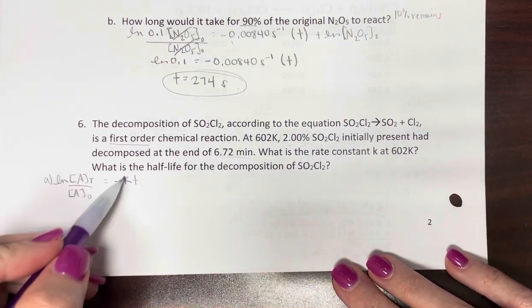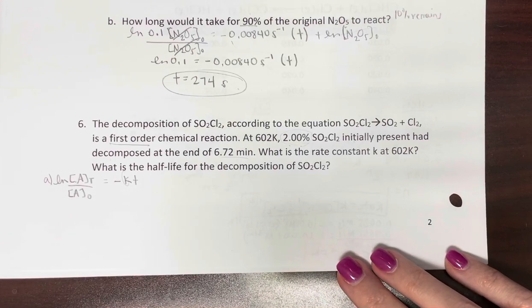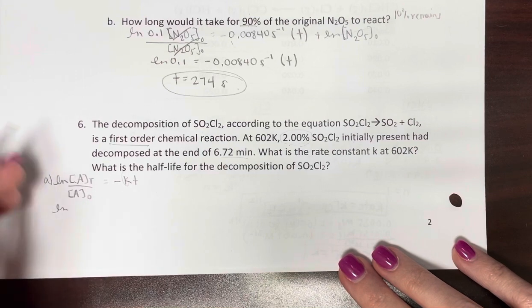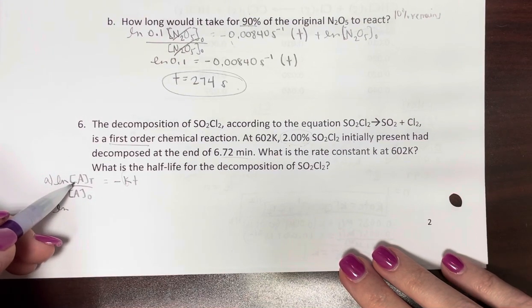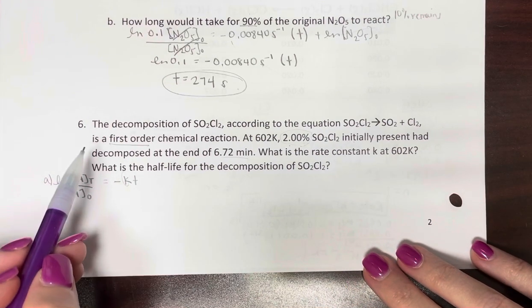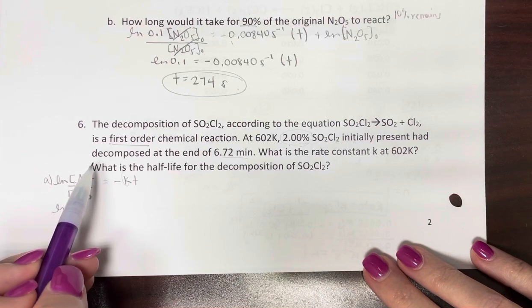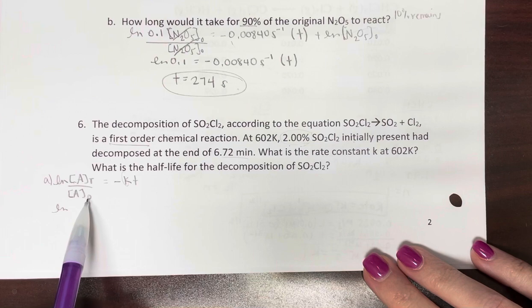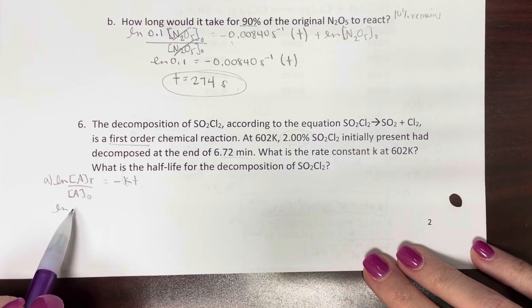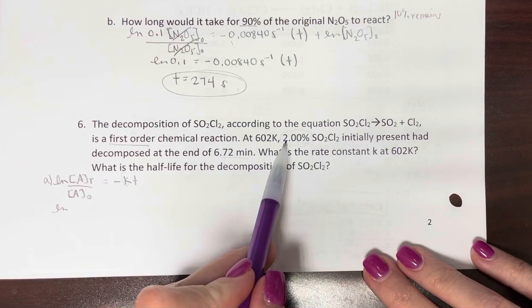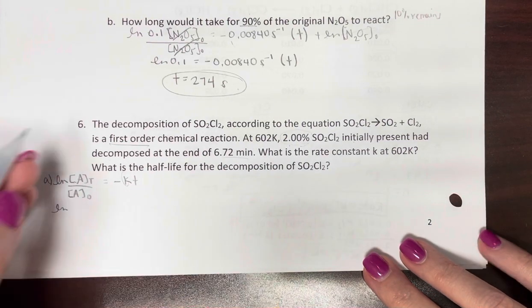So we're trying to solve for rate constant k. Okay, so natural log [A] at time t. We have 2% had decomposed. How much remains? 98%. It doesn't matter what it is, we just know it's 98%.